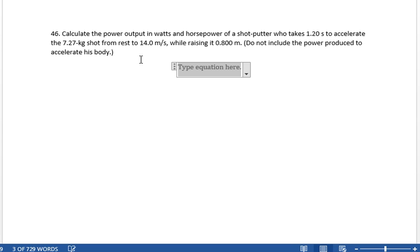So what we're looking at, we're asking for the power and we're given everything we need to know to figure out the work that was done on this shot put. So basically the work is a sum of the kinetic energy that was imparted to it plus the increase in potential energy.